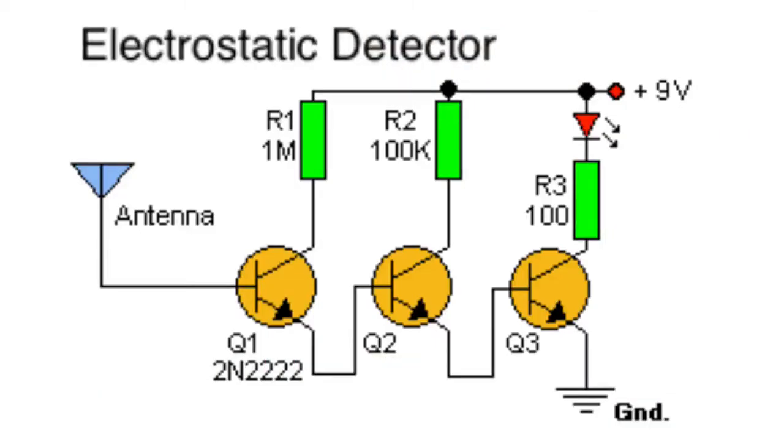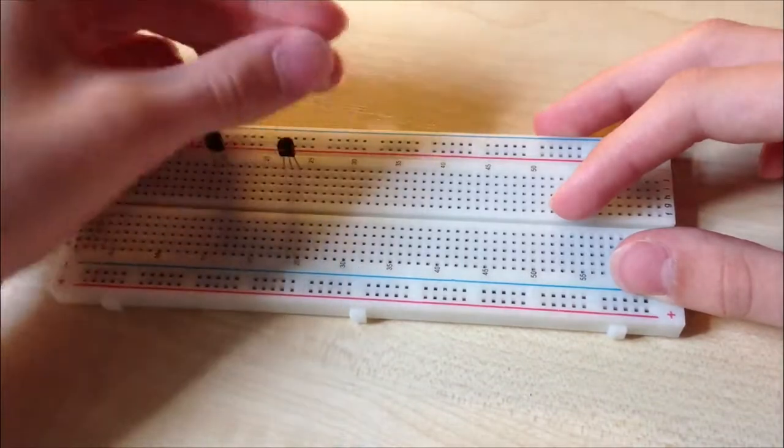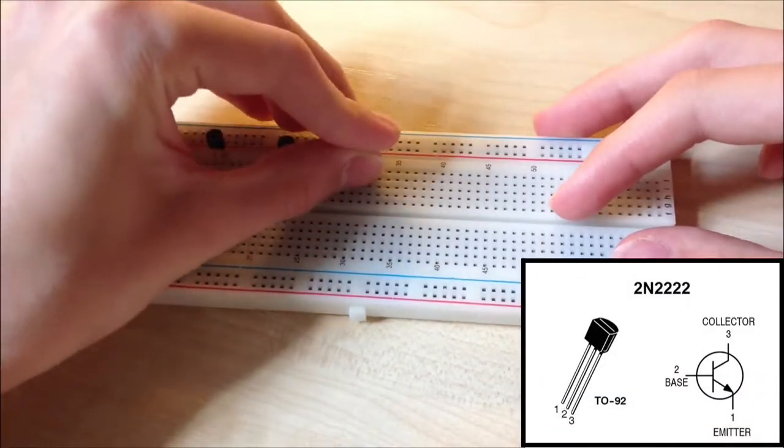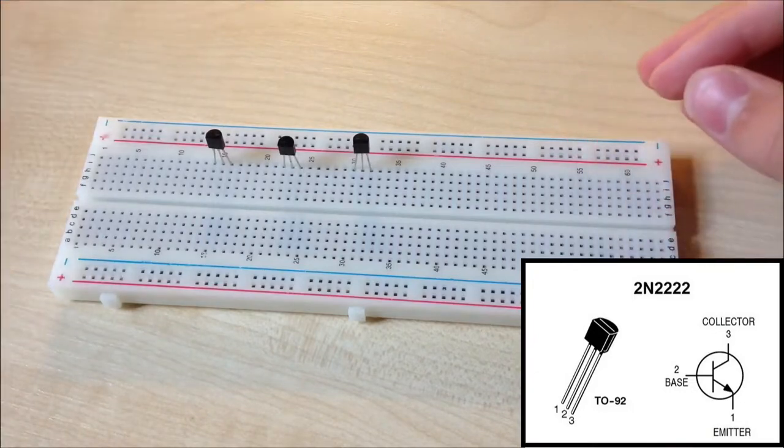According to this schematic, we will create our electrostatic detector. First of all, insert three transistors into the breadboard like this. On the right, you can see the diagram for our transistor.